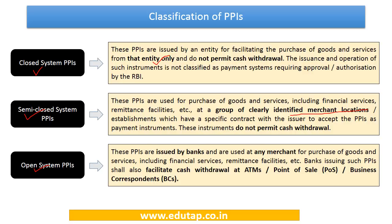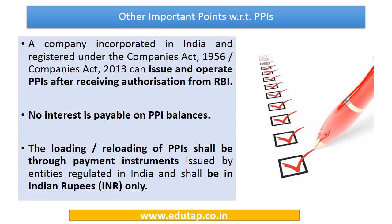Semi-closed system PPIs are used for purchase of goods and services including financial services at a group of clearly identified merchant locations. The scope is neither very narrow nor very wide — there is a defined panel of merchants on which you can use your PPIs. These instruments also do not permit cash withdrawal.